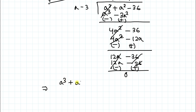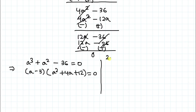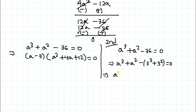So from the long division, a³ + a² − 36 = 0 factors as (a − 3)(a² + 4a + 12) = 0. I also have a second method to find these factors. We can write a³ + a² − 36 as a³ − 3³ + a² − 3² = 0, then expand using algebraic identities: a³ − 3³ = (a − 3)(a² + 3a + 9) and a² − 3² = (a − 3)(a + 3).